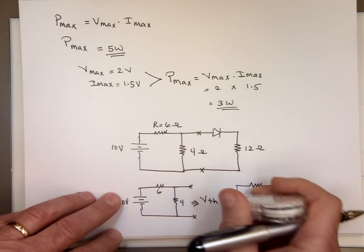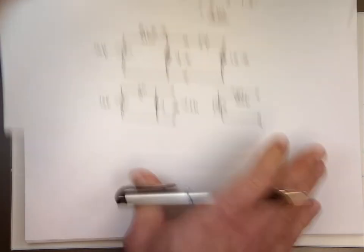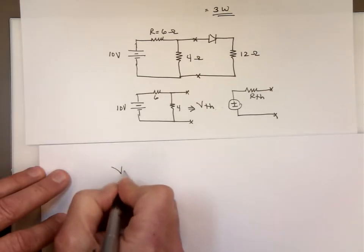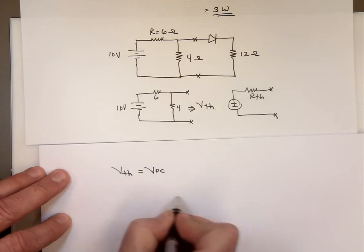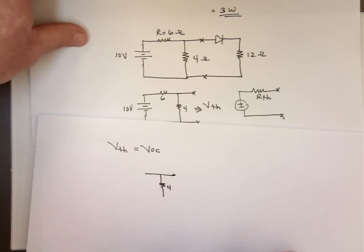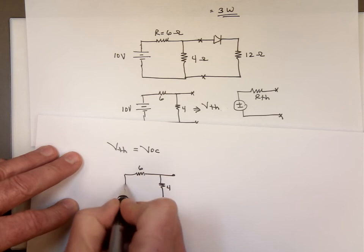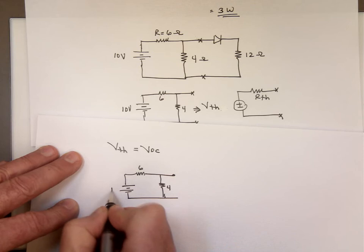So how do we find V thevenin? For this circuit, V thevenin is V open circuit. So here we go, let's look at our circuit. And if you remember, we can use voltage division here.